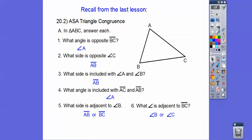Recall from the last lesson, we talked about opposite sides, opposite angles, adjacent sides, adjacent angles, and included sides and angles. What angle was opposite side BC? It would have been angle A. What side was opposite angle C? Opposite angle C is side AB. What side is included between angles A and B? That would have been side AB. What angle is included with sides AC and AB? It would have been angle A. Adjacent to angle B — either this side or this side. Adjacent to side BC would be either angle B or angle C. Adjacent means next to or touching it; opposite means go straight across.